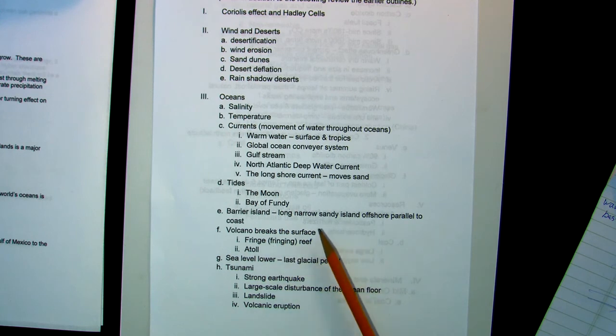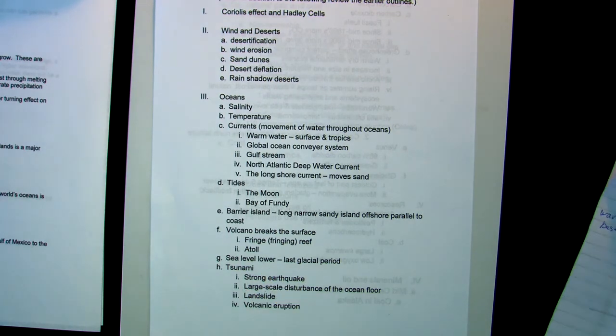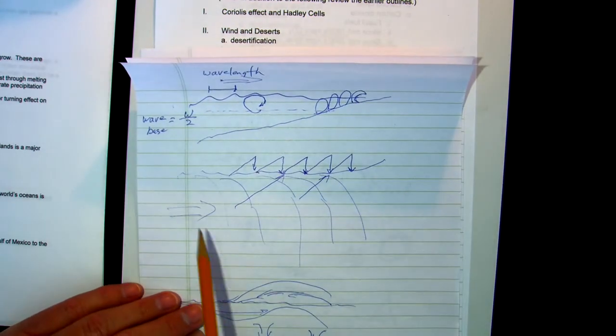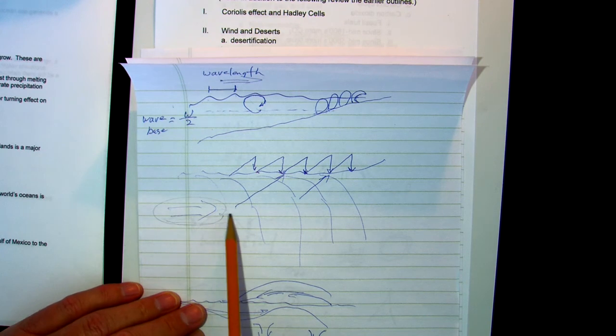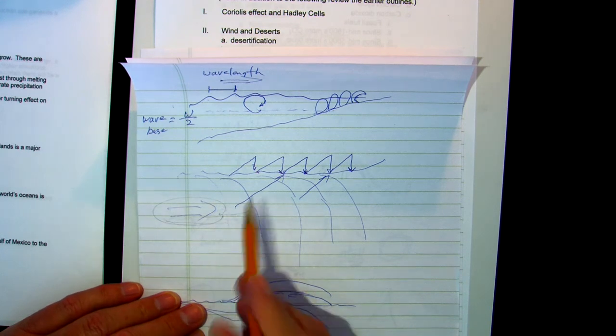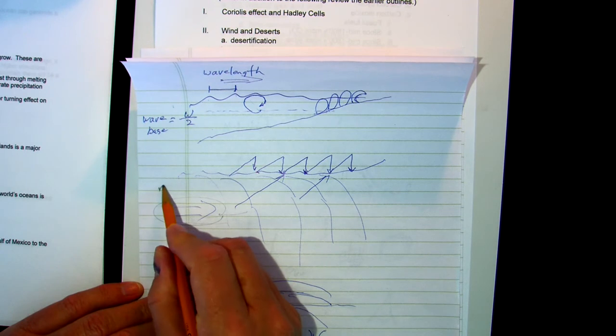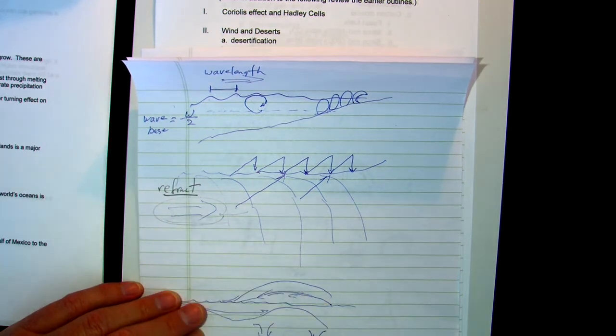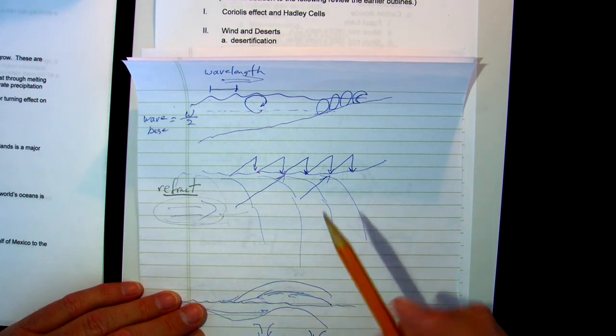When this runs into Antarctica, it will surface and bring up lots of nutrients for the plankton. Let me talk to you for a moment about longshore current. Here's your longshore current here. Where the currents come in contact with land, they will refract and turn toward the land.